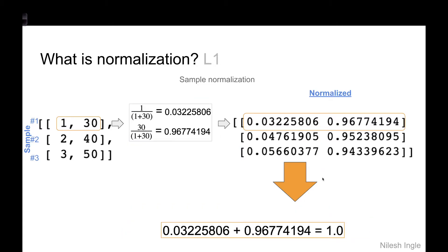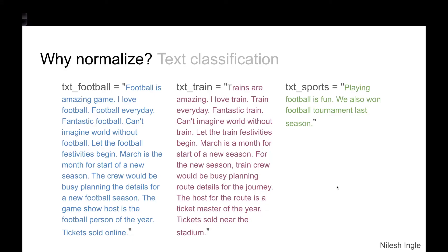For L1 normalization, we again look at the samples — the rows. Instead of taking squares and square roots, we simply add the numbers: 1 plus 30. Then we divide each value by that sum — 1 divided by 31 and 30 divided by 31 — giving us the sample vector. When we add the elements of that sample vector, they add up to 1. Those are the key differences between L2 and L1 normalization.